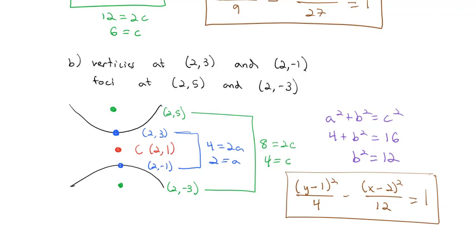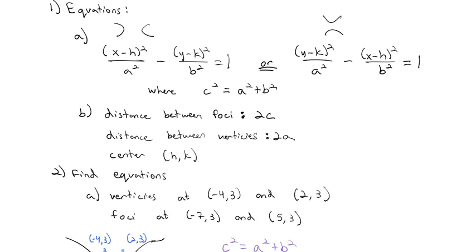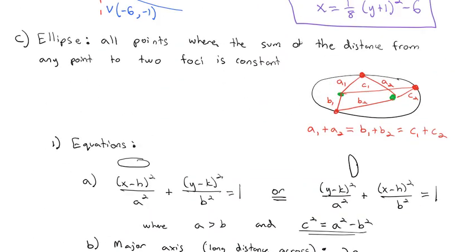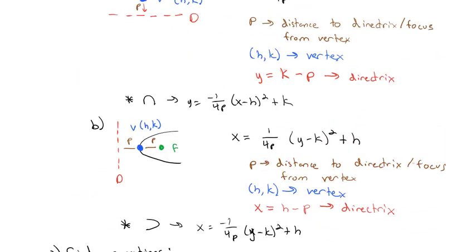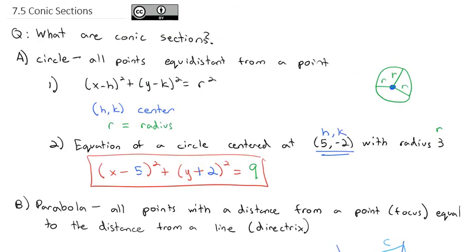So this video was a quick overview of all the conic sections we're going to work with in this course: hyperbolas, ellipses, parabolas, and circles — four conic sections we'll talk about further in class. Take a look at the homework assignment and try a few of these. There are a lot of pieces to keep track of, but they're not too hard overall. We'll see you in class.